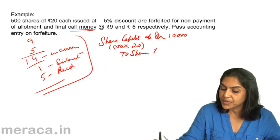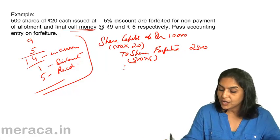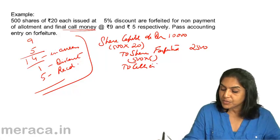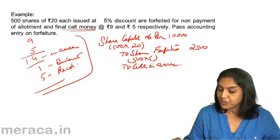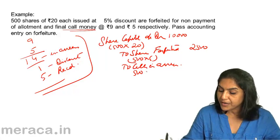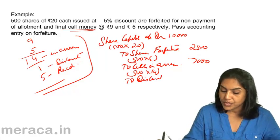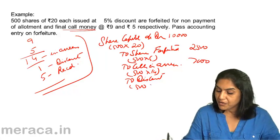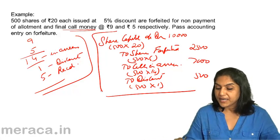Shares forfeited account is credited with the amount received. What is the amount received? Rs 5 per share — 500 shares into Rs 5 equals Rs 2,500. To calls in arrears — how much is in arrears? Rs 9 plus Rs 5 equals Rs 14 in arrears. So 500 into Rs 14 equals Rs 7,000. And to discount on issue — Rs 1 per share. 500 into Rs 1 equals Rs 500. This is the complete accounting entry.